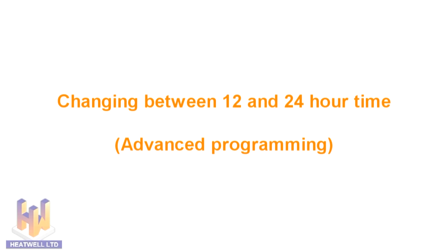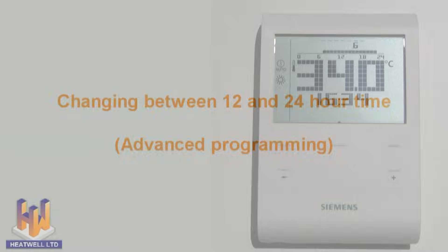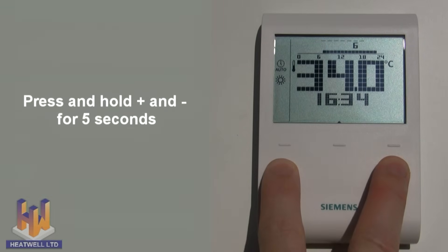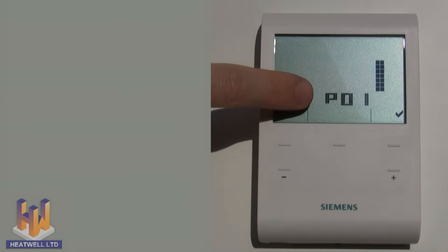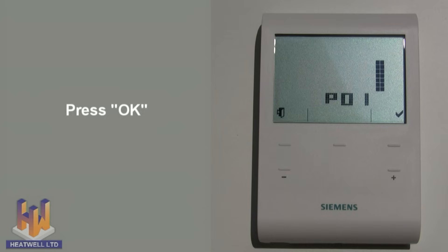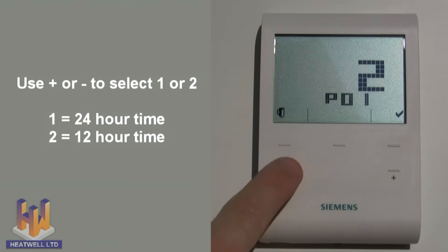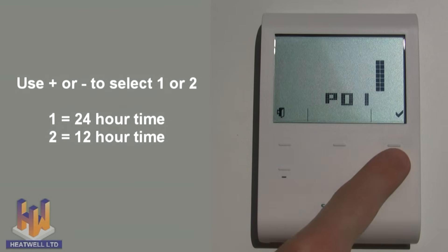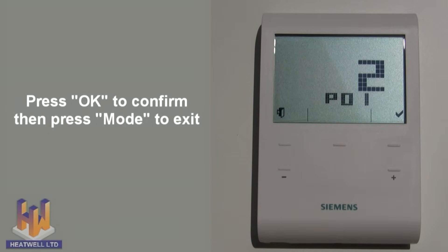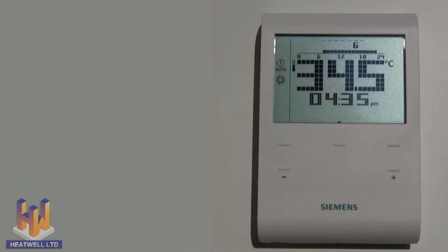Changing between 12 and 24-hour time. To switch between 12 and 24-hour time, go to the advanced settings menu by pressing the plus and minus buttons at the same time for 5 seconds, then let go. P01 will show, which is the clock settings. Press the OK button. Now use the plus or minus button to change between 1 and 2 — 1 is 24-hour time and 2 is 12-hour time. In this case we will select 2, which is 12-hour time. Press OK to confirm and then press the mode button to exit. The clock is now displaying 12-hour time.